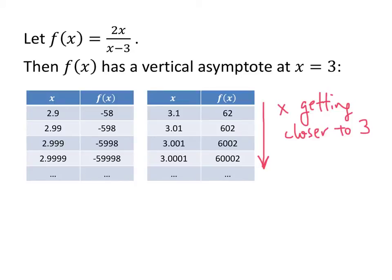The idea is that I'm trying to understand what happens as x gets closer to 3. I don't know exactly what happens at 3, but I want to find out what happens as x approaches 3. What I'm finding is that my f(x) value is getting really big in the negative direction from one side, and really big in the positive direction from the other.